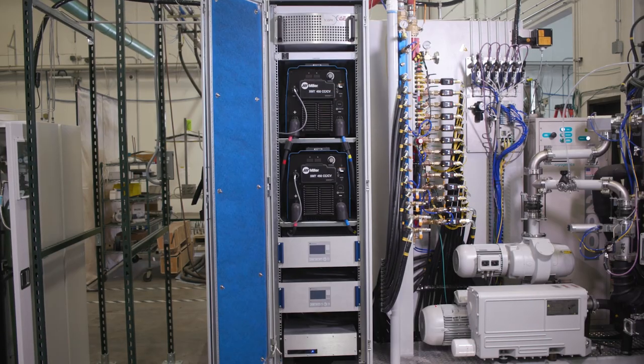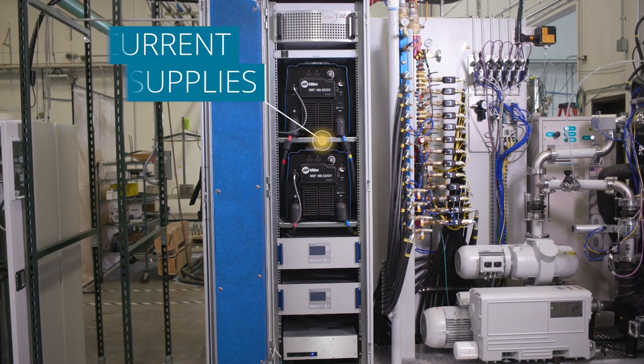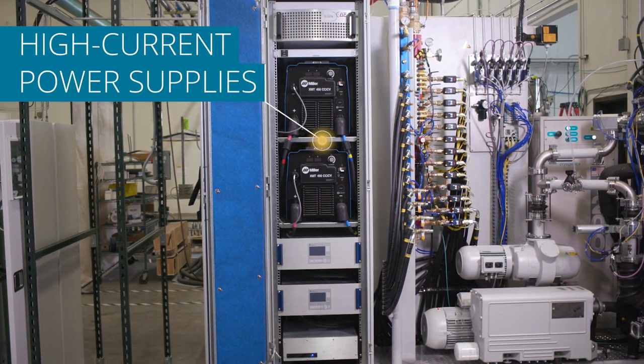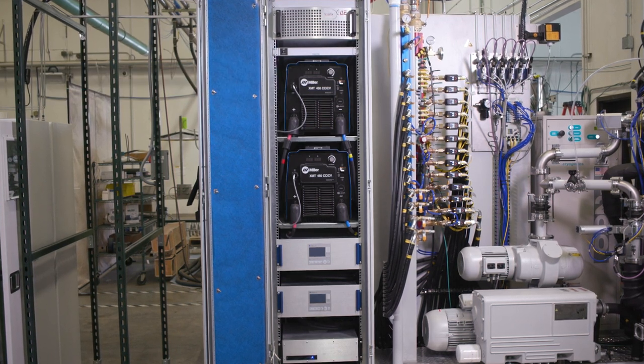The electrical and control subsystem also includes several important components, including power supplies that drive the cathodic arc or sputtering deposition process, as well as a PLC-based control system.